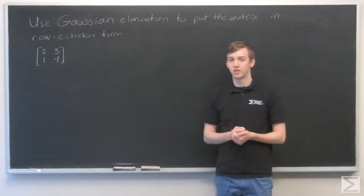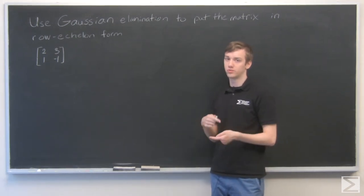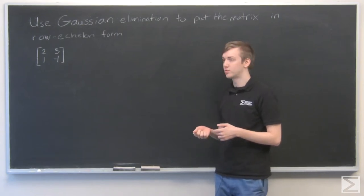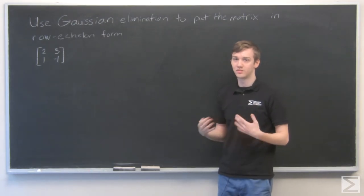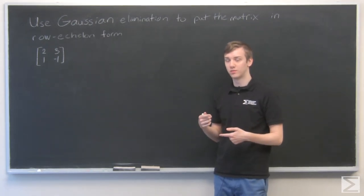If we remember the operations that we can use on matrices, they are switching rows around, we can multiply a row by a constant, and we can subtract one row from another row as many times as we want. So basically, subtract a constant of a row from another row.